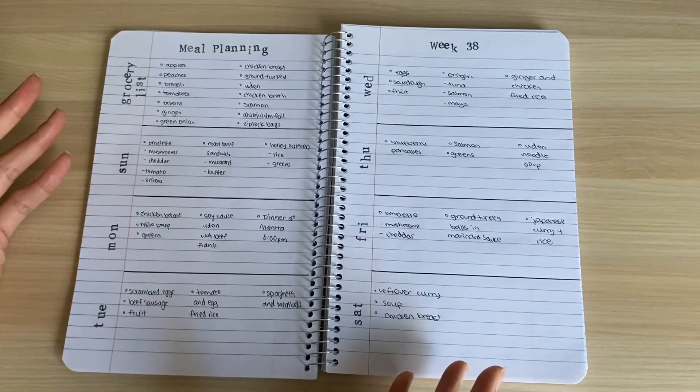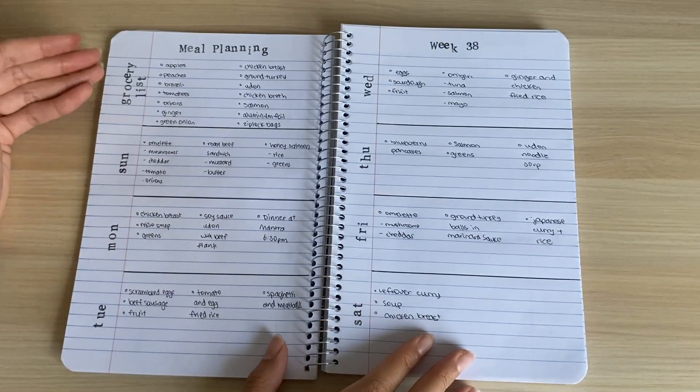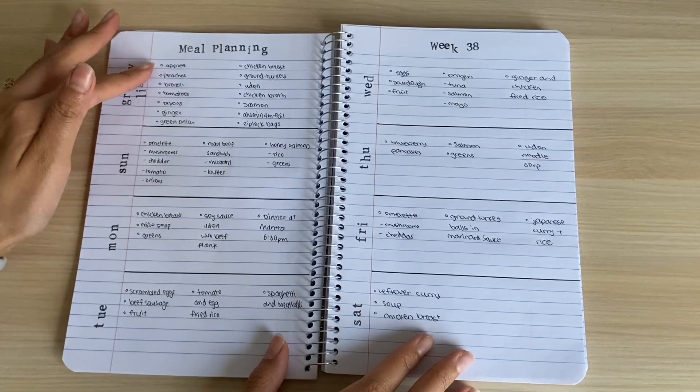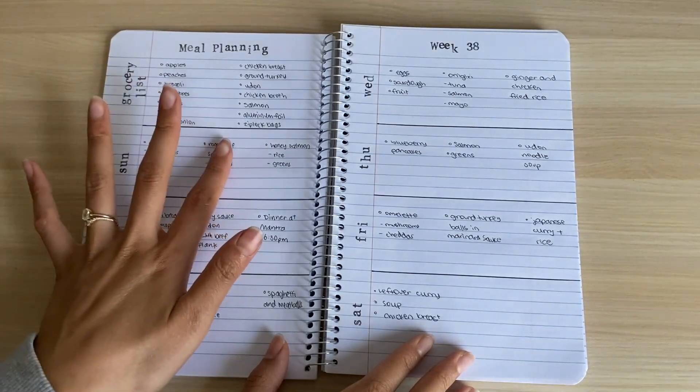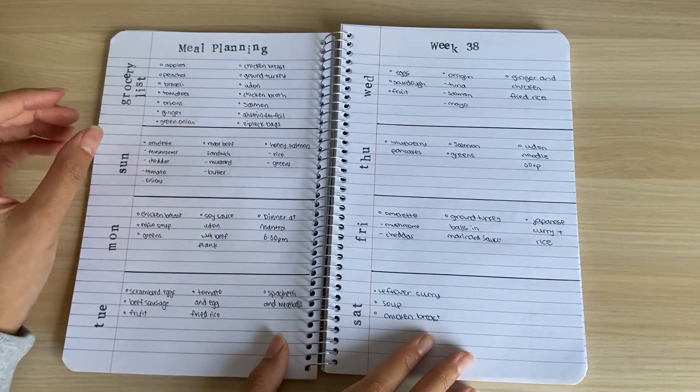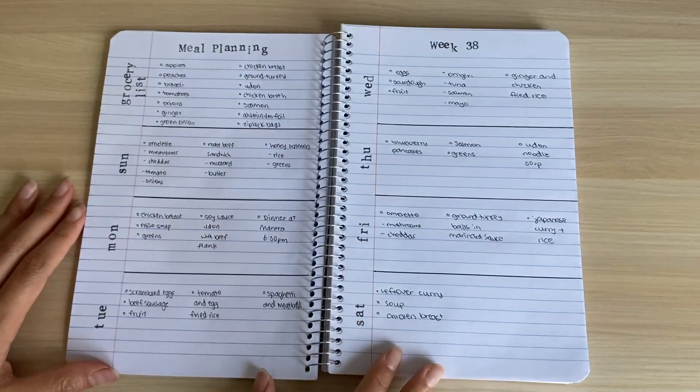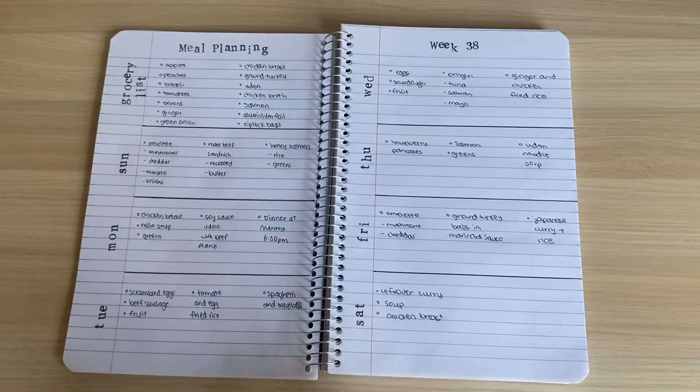This is what the spread looks like. As you can see, with the grocery list I have filled it in, and then for the meals for each day, you can see I've sectioned them off into thirds and I've kept them pretty basic and brief. That is the meal planning spread.